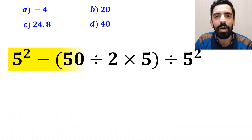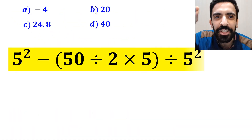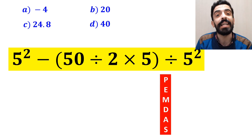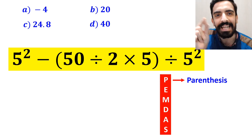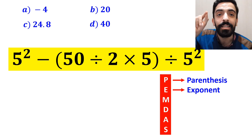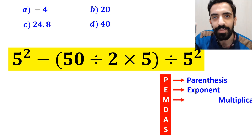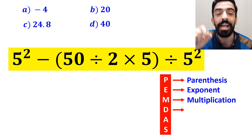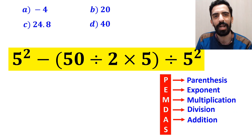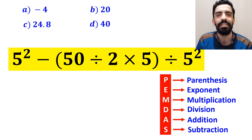Now let me show you how to solve this expression properly. To solve this question, we need to follow a rule called PEMDAS. P stands for parenthesis, E stands for exponent, M stands for multiplication, D stands for division, A stands for addition, and S stands for subtraction. It means we need to perform all the operations step by step in order from top to bottom.